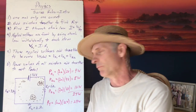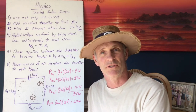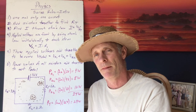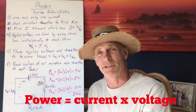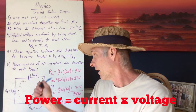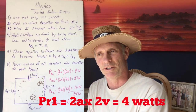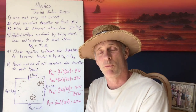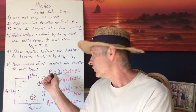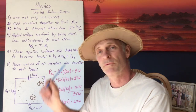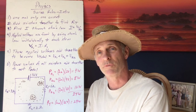Now let's look at power. Power is current times voltage, from chapter 34. We had voltage drops of 2 volts, 4 volts, and 6 volts. For resistor 1, P sub R1 = 2 amps × 2 volts = 4 watts.